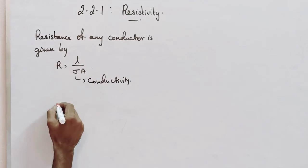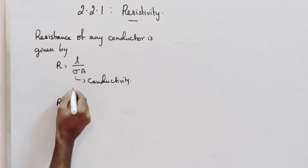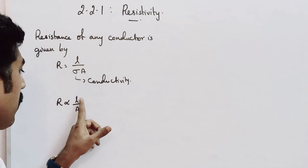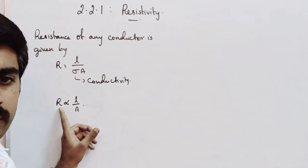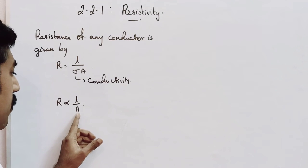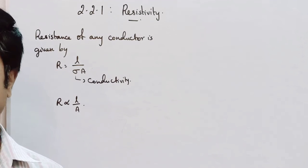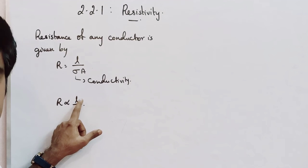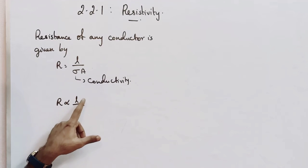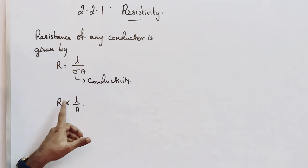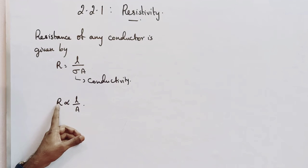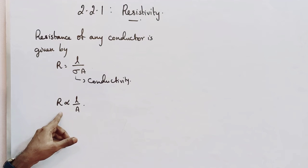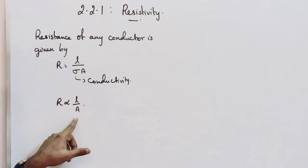We can write that resistance R is proportional to L over A. The numerator L is directly proportional to resistance, and the denominator A is inversely proportional to resistance. So if the length of the conductor increases, resistance also increases, but if the area of cross section increases, resistance decreases — that is the inverse relationship.